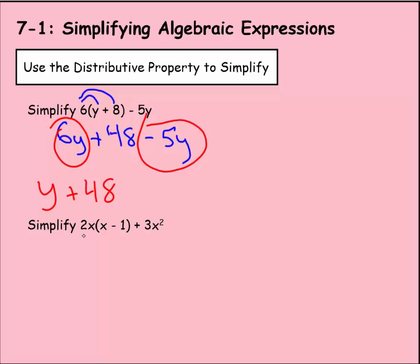Now we're asked to simplify this: 2x(x - 1) + 3x². So we're going to distribute this 2x to both. So we have 2x times x. The x times x is going to be x², right? Squared means to multiply something by itself twice. So 2x². Then we drop this minus sign here. 2x times 1 would just be 2x. Then we have plus 3x² here.